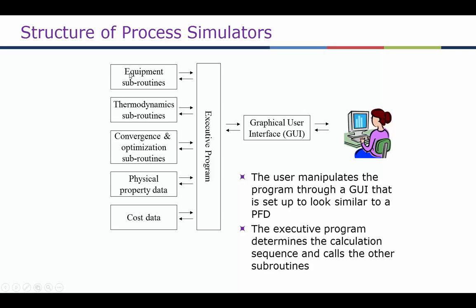When doing optimization or convergence, it can look up packages for those and physical property data from experimental or thermodynamic data that is built into the properties simulation. We won't be going into cost data much in this unit, but Aspen Plus has costing models as well.